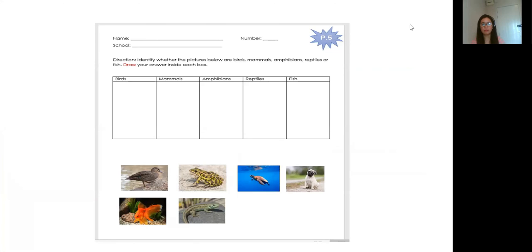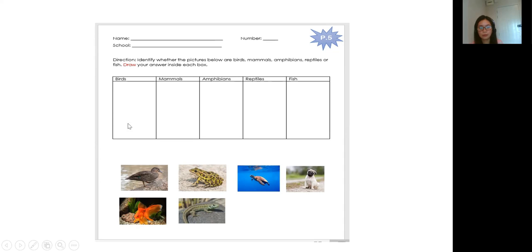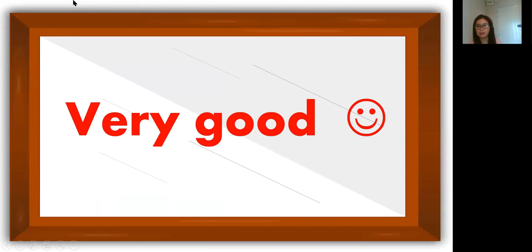Before that, you will write your name and your number. Direction: identify whether the pictures below are birds, mammals, amphibians, reptiles, or fish. You have to draw your answer inside each box. The first box is birds, second is mammals, third is amphibians, fourth is reptiles, fifth is fish. For example, the first picture is duck — duck belongs to birds, so you draw duck under birds. Do you understand? That's all, thank you. I hope you will study the lesson. Thank you and goodbye.